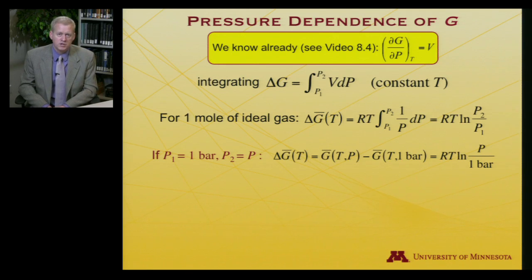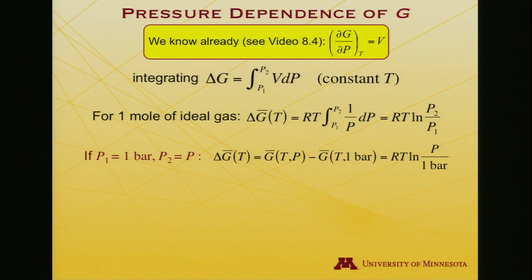So now let me take the initial pressure to be one bar. That defines P₁. And instead of writing P₂, I'll just write P. P could be any pressure. So in that case, ΔḠ, so the molar change in the free energy, is equal to Ḡ at the new pressure, which I'm just writing P now, not P₂, minus Ḡ at the original pressure, which we're choosing to be one bar. And that's equal to RT log P over one. So I've replaced P₂ and P₁ with the quantities I say I'm going to use. That means I'm going to rewrite it looking slightly differently.